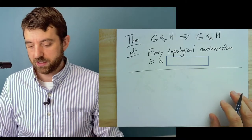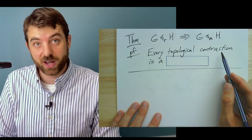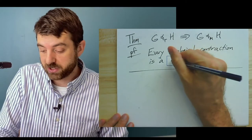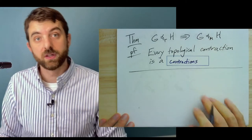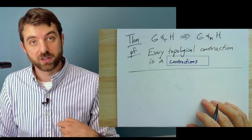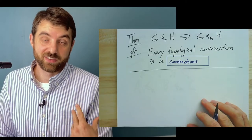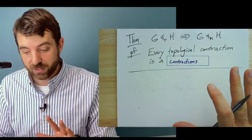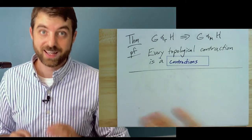And the way you would prove that is just to observe that every topological contraction, that is every time we contract a path to a single edge, well, that's a contraction. And so the operations match up now. So the operations we're allowed to do to form a topological minor are just a subset of the operations we can do to form minors more generally. So every topological contraction is a contraction. Every topological minor is a minor.